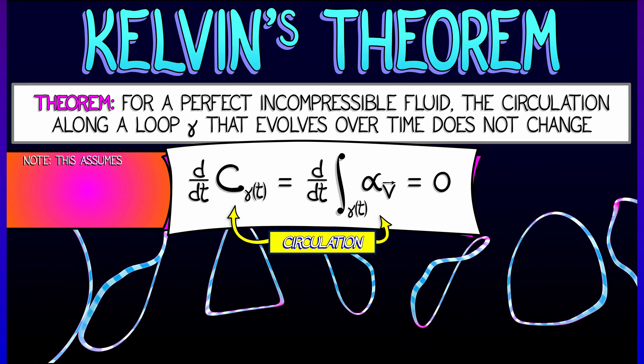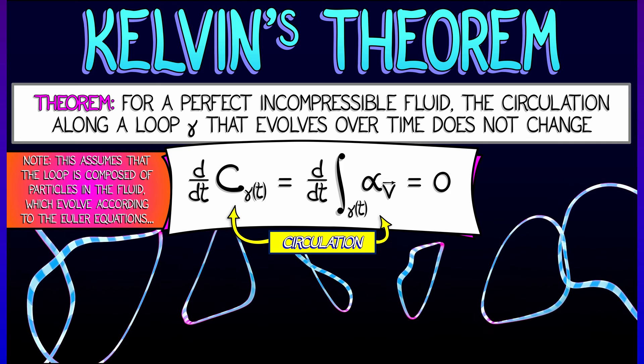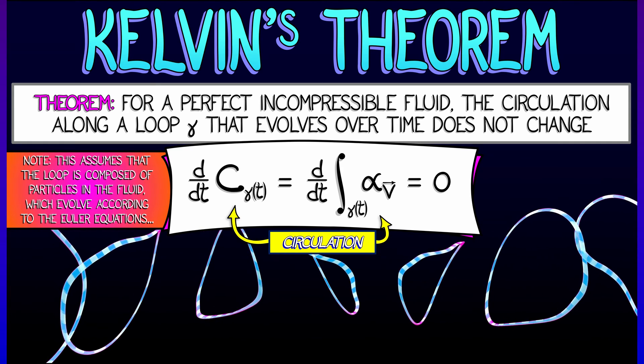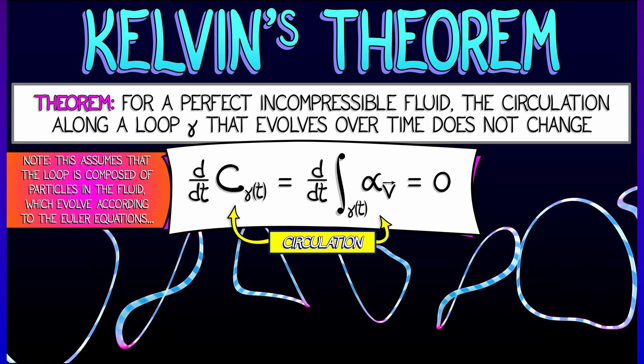Let's be careful about this. Notice that this means that the loop is composed of particles that are evolving, that are moving in the fluid according to the velocity field, which itself is changing according to the Euler equations.